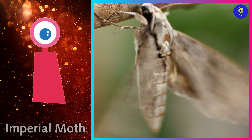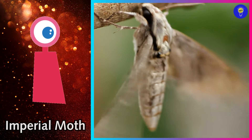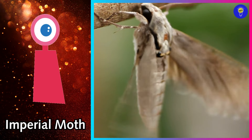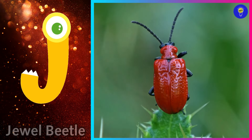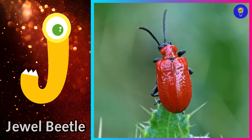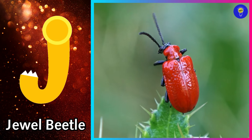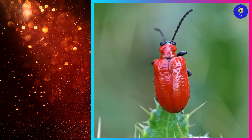I is for imperial moth. I, imperial moth. J is for jewel beetle. J, jewel beetle.